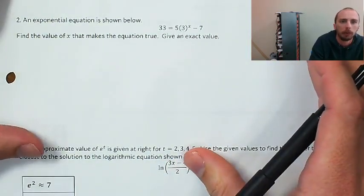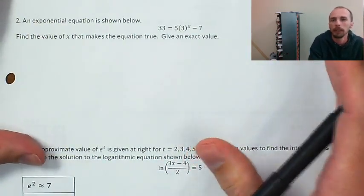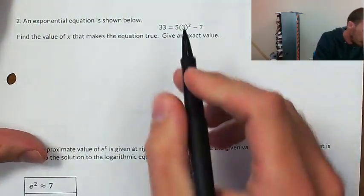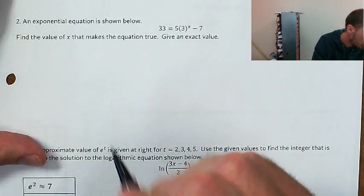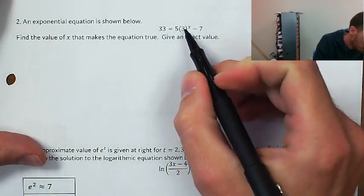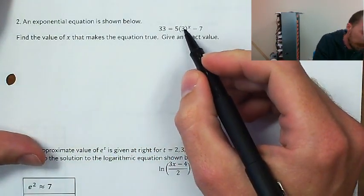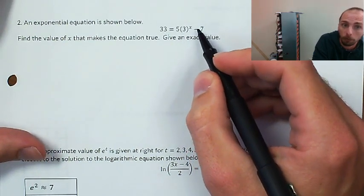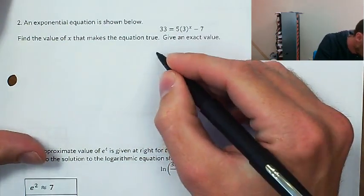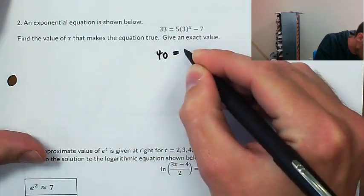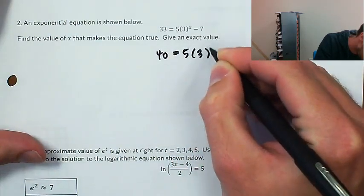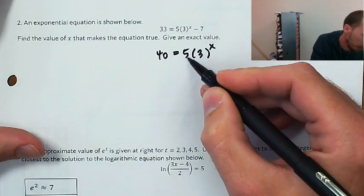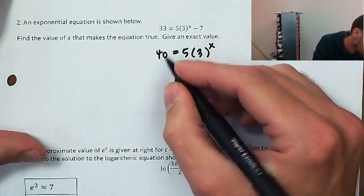To find the value of x that makes the equation true, give an exact value — that might be an answer in terms of a log or in terms of e. I'm going to first isolate the exponential, going in reverse order of operations. I'll do addition and subtraction first, so I'm going to add 7 to both sides. Then I'm going to isolate the exponential by dealing with multiplication and division — I've got multiplication by 5, so I need to divide both sides by 5.